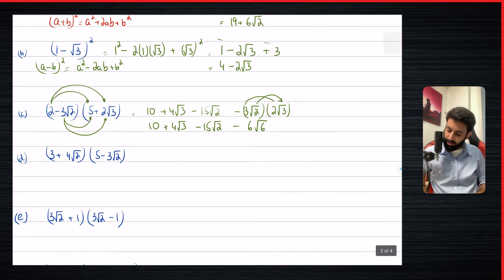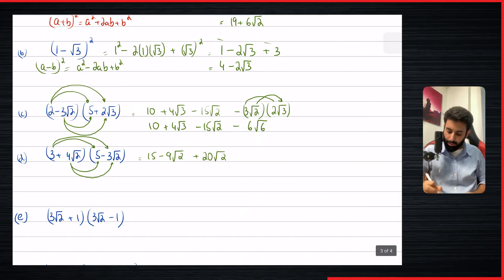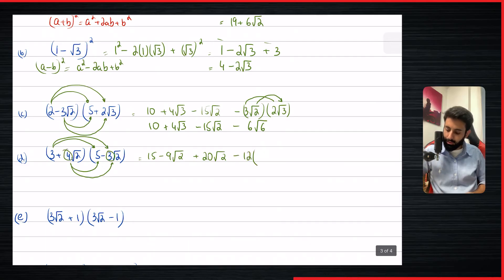Part d: (3 + 4√2)(5 - 3√2). Three into five is 15. Three into minus 3√2 is minus 9√2. Four√2 times five: four and five multiply to give 20√2. Now for 4√2 into 3√2: four multiplied by three is twelve, and √2 multiplied by √2 is two.